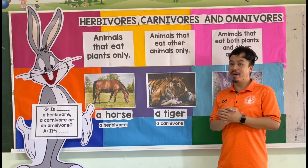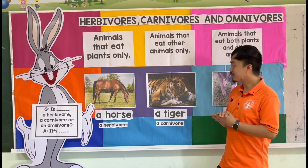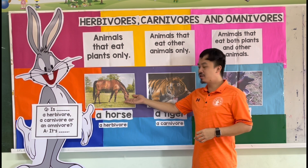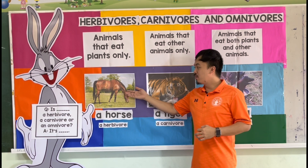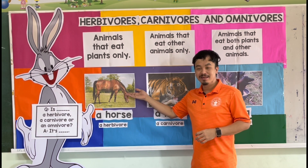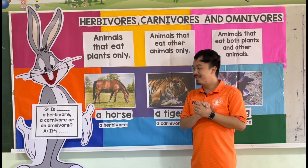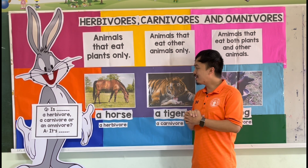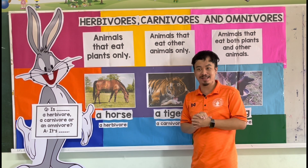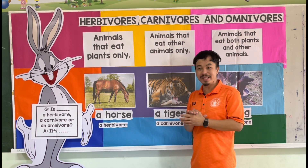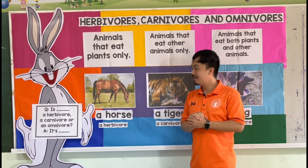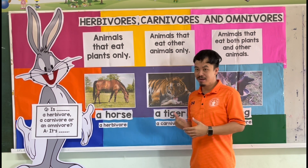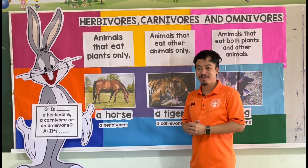Let's begin with herbivores. I have here a picture of an animal. What animal is it? Very good — it's a horse. What does a horse eat? A horse eats plants. Therefore, a horse is a herbivore.